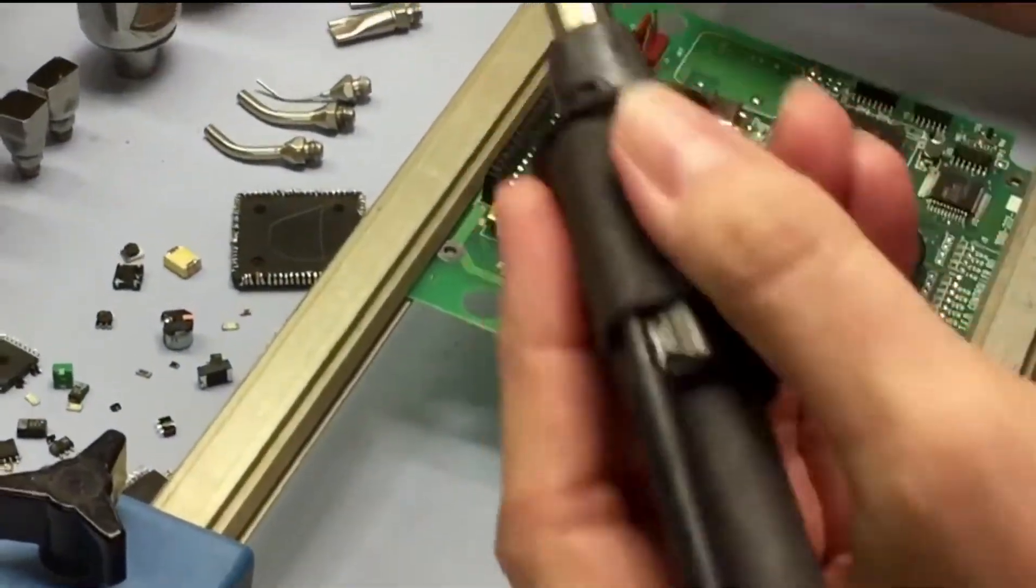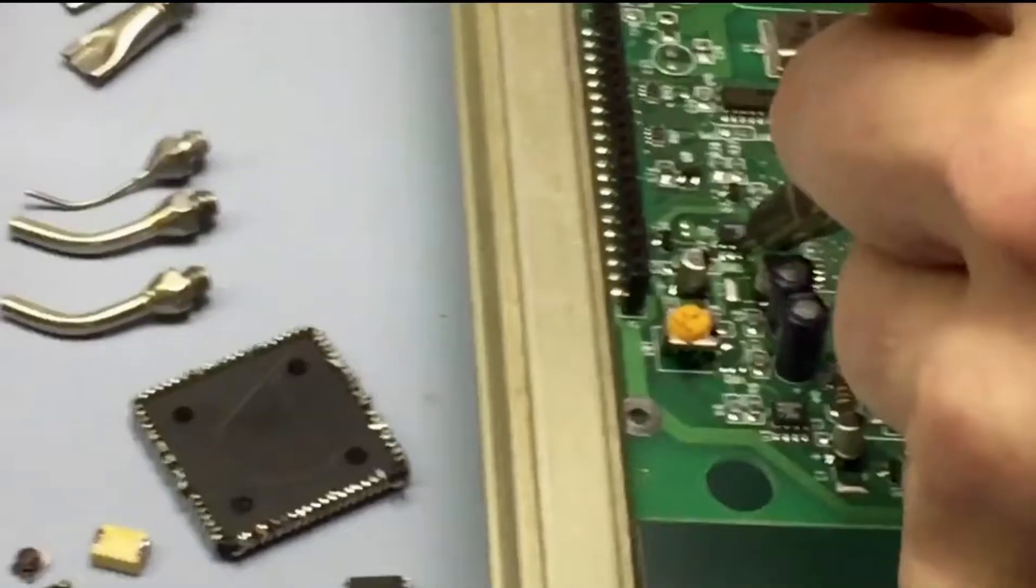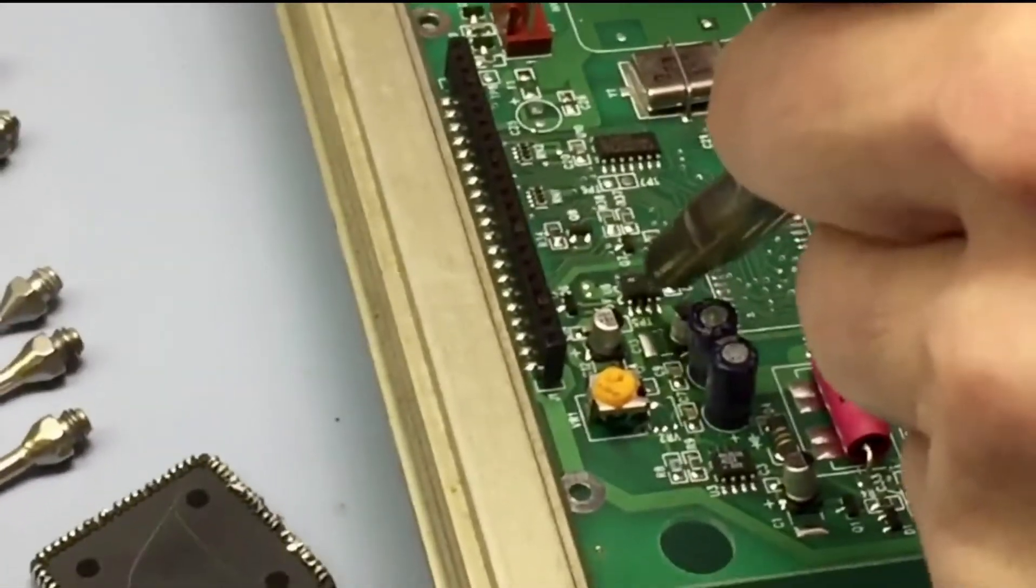So what you can do is you use just the standard tip that comes with it, just like we removed this package, and you just heat up one side at a time. And again, we're still using the same air pressure of six.